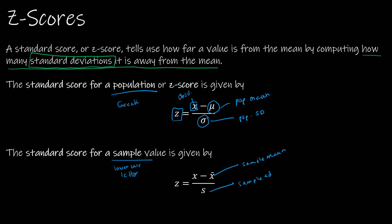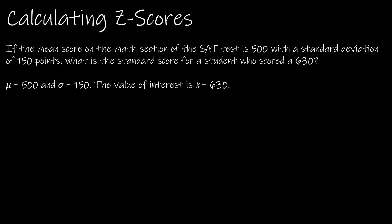It's really the same thing. You're going to hear me say 'observed minus expected over the standard deviation' a lot — you'll probably get really sick of it, so sorry about that. But it works all the time. What's the observed value? What's the expected value? We expect the mean, whether it is a sample mean or a population mean, and then we divide by the standard deviation.